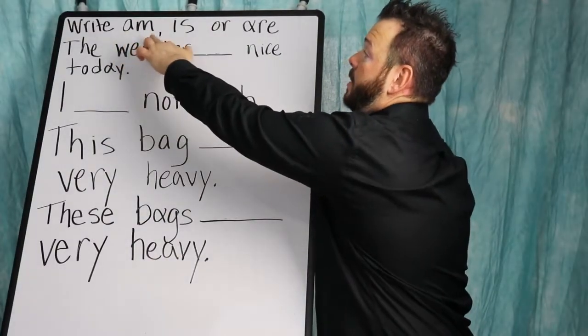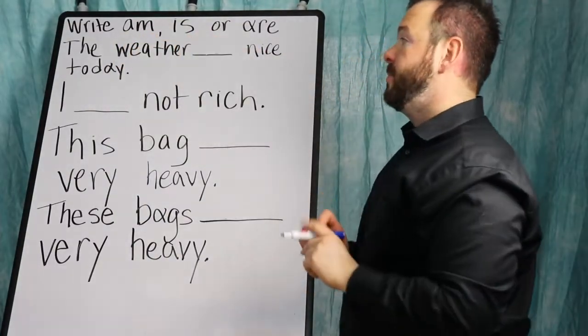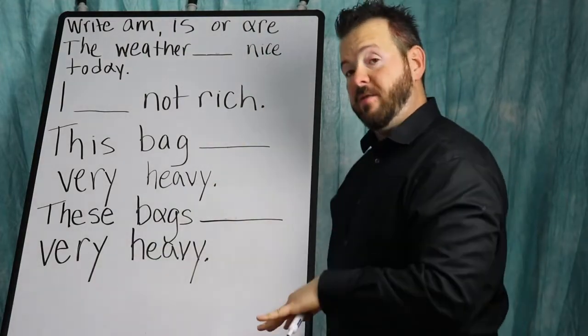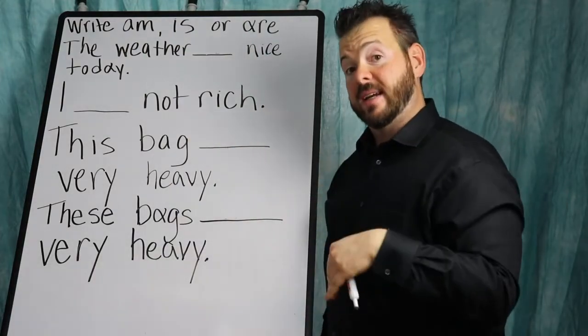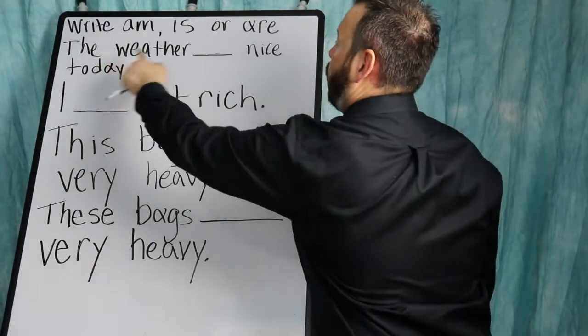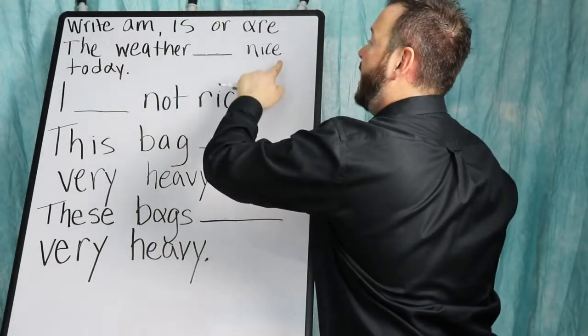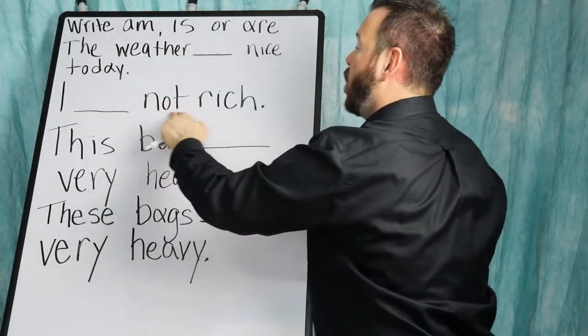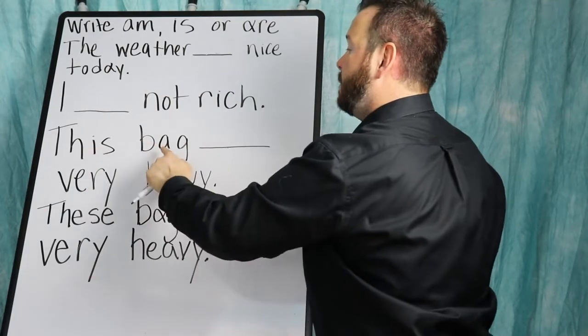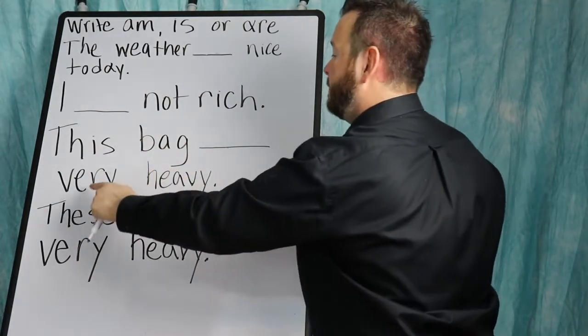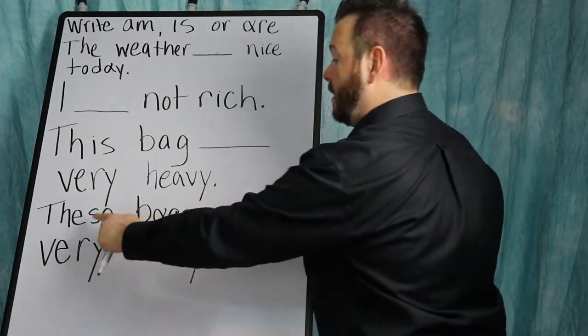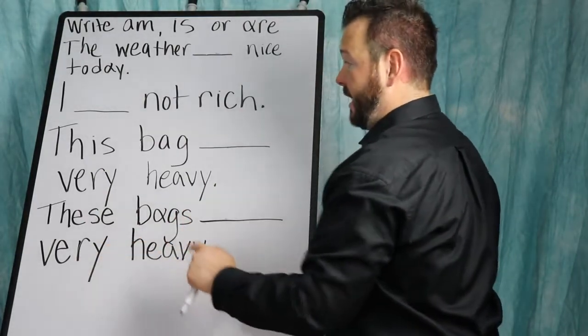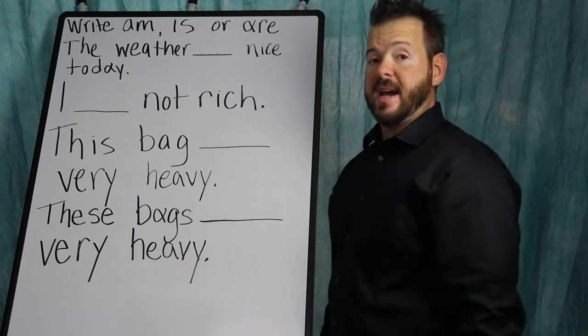Write am, is, or are. I'll read everything first, then you can pause it, write everything down, and then we'll go through it together and read it again. The weather blank nice today. I blank not rich. This bag blank very heavy. These bags blank very heavy. Now pause the video so you can write everything down.